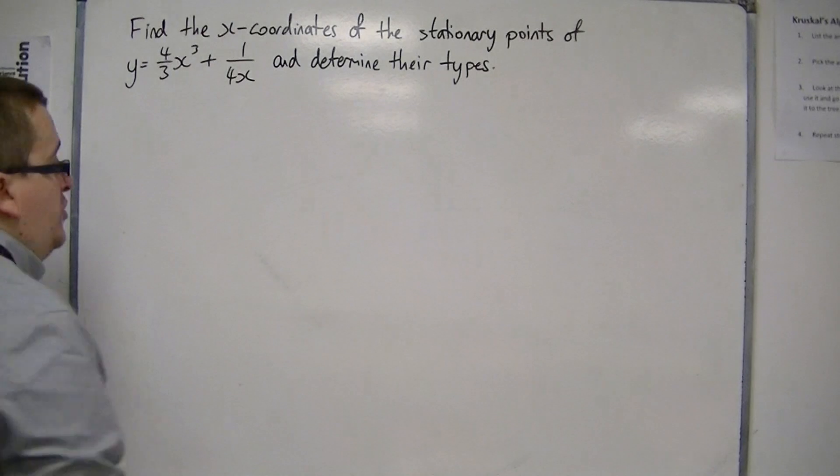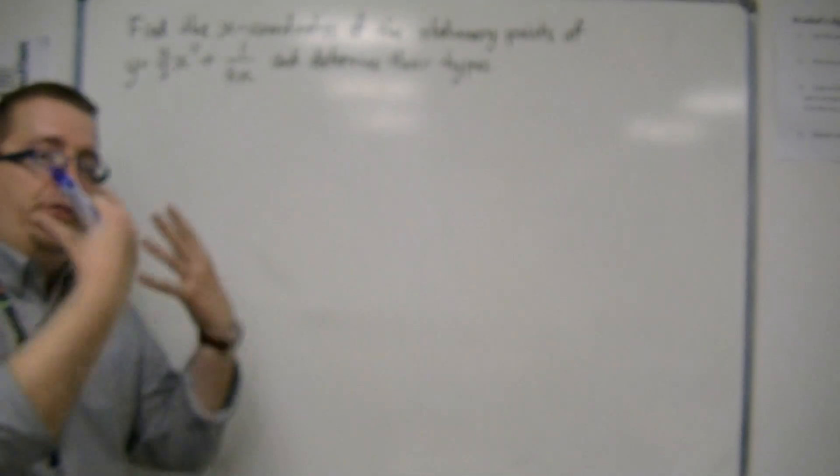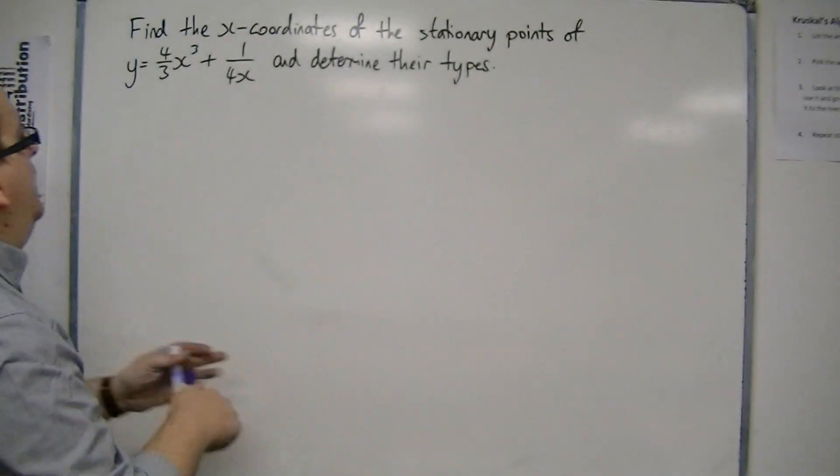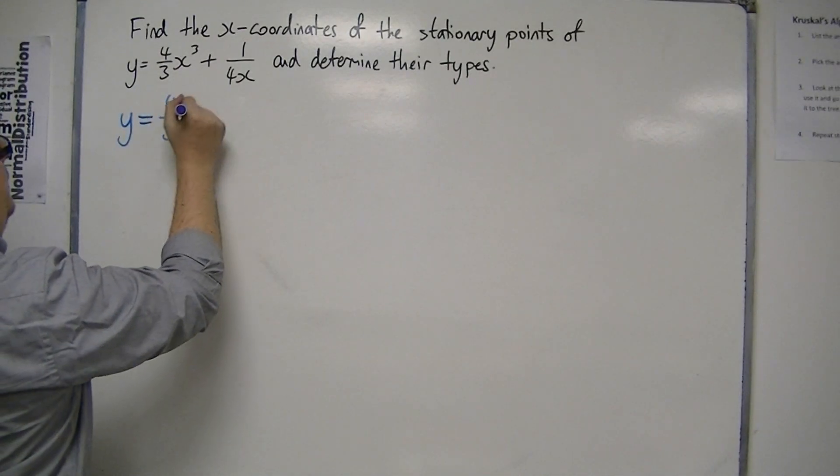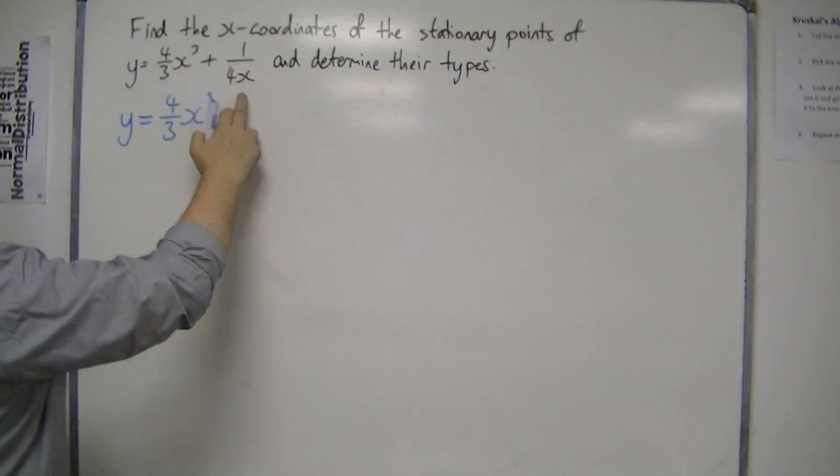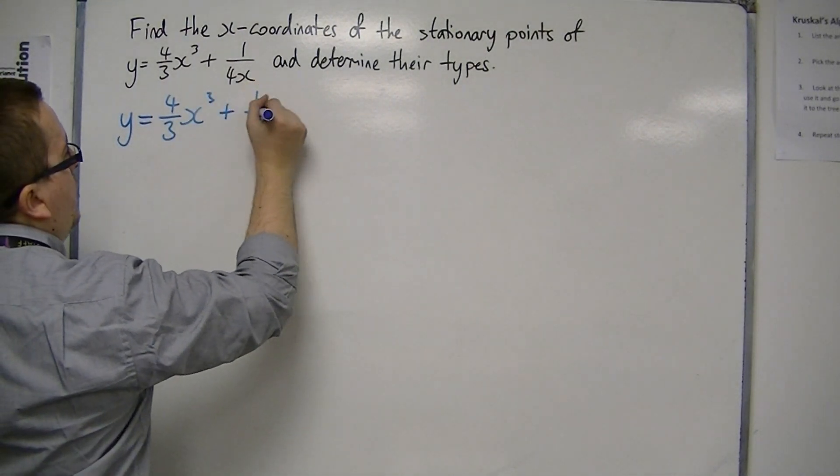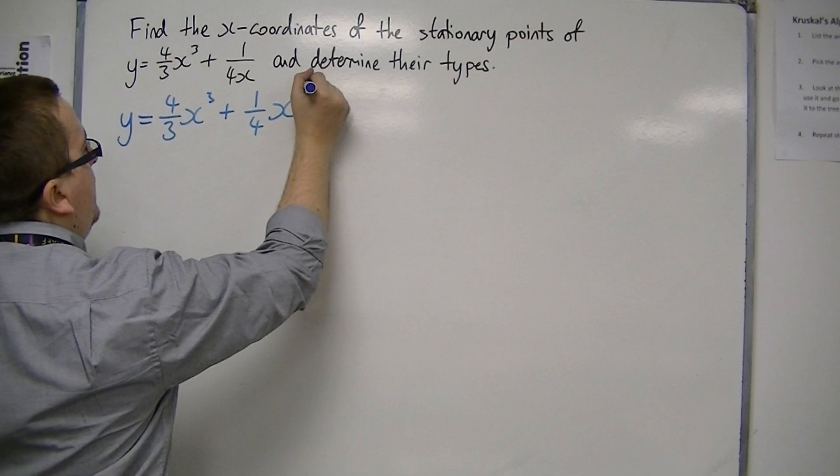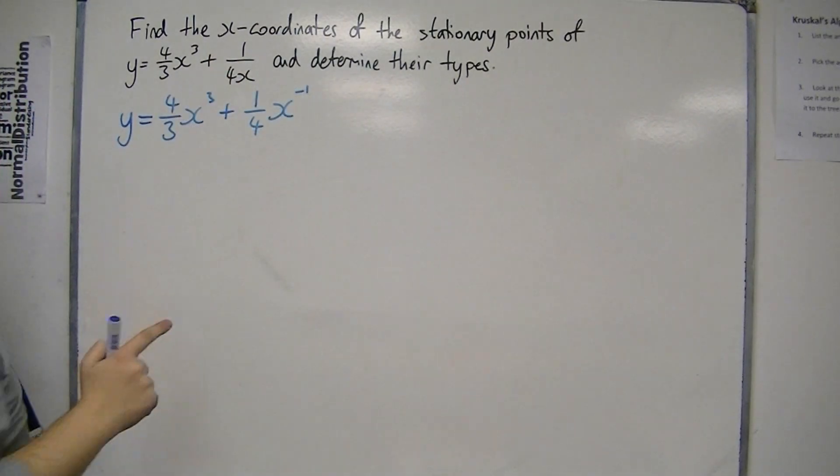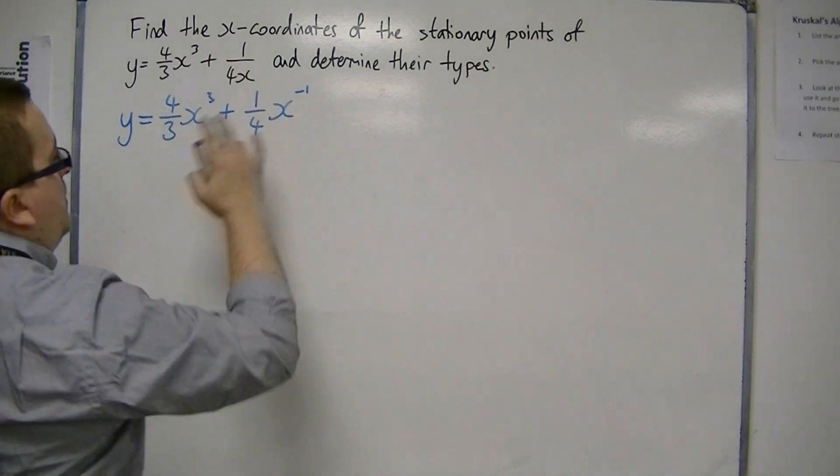So the first thing you want to do is write it as a sum of powers of x. So y is equal to 4/3 x³, and now this 1/4x, I'm going to rewrite that as 1/4 x⁻¹, because that's 1/4 times 1/x, so that's 1/4 times x⁻¹.